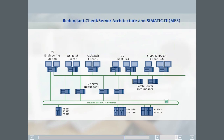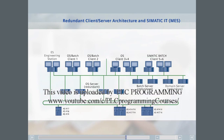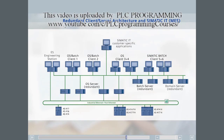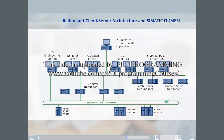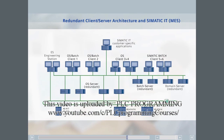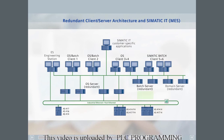The fourth and last example is based on example three. Due to the additional requirements for availability, redundant domain controllers will be used to provide user management. An additional PC with Sematic IT and a customized application will also be installed. These communicate with Sematic batch using the batch API. To support Sematic IT and the custom application, the batch API is installed on the two batch servers.